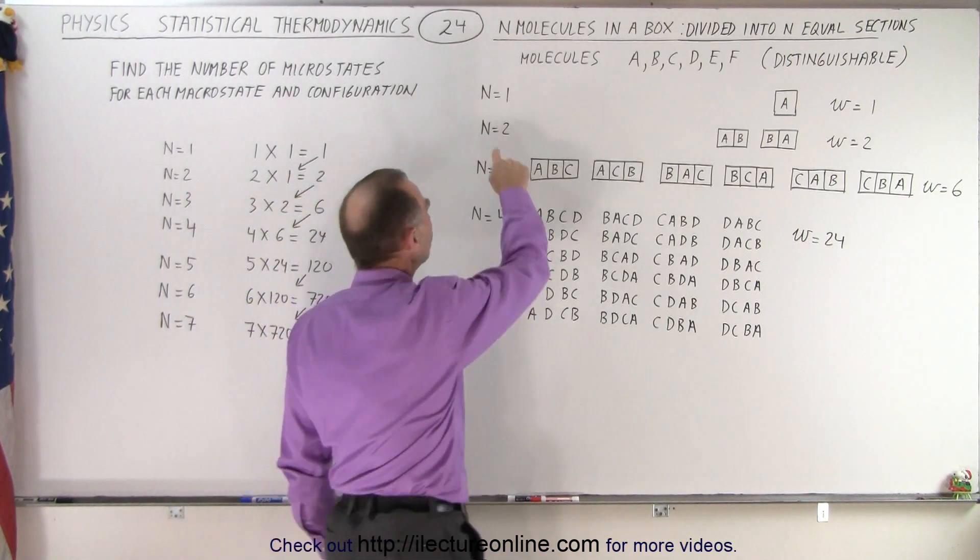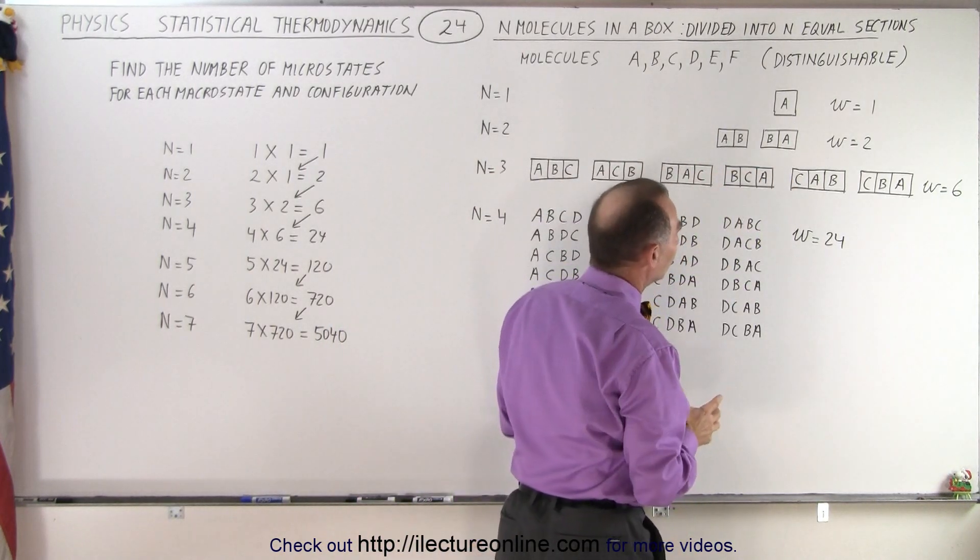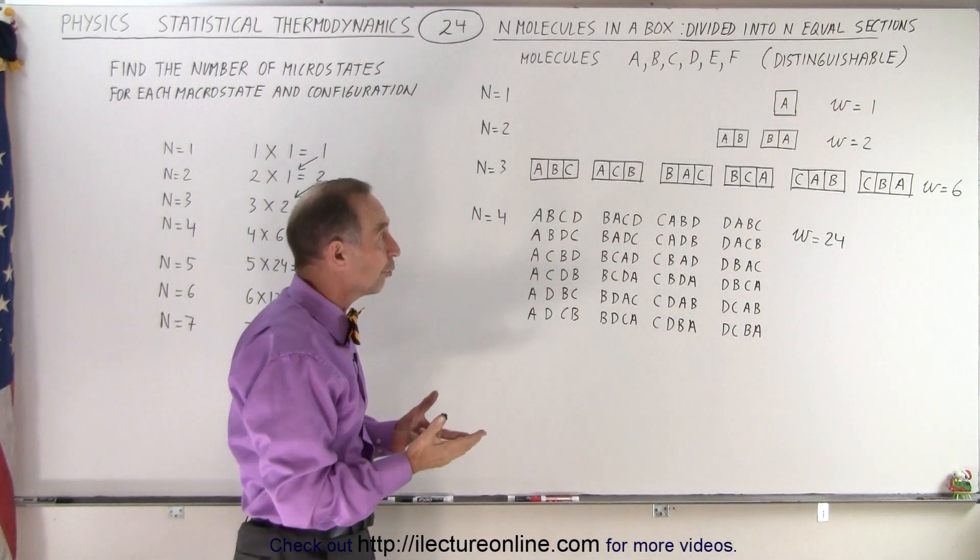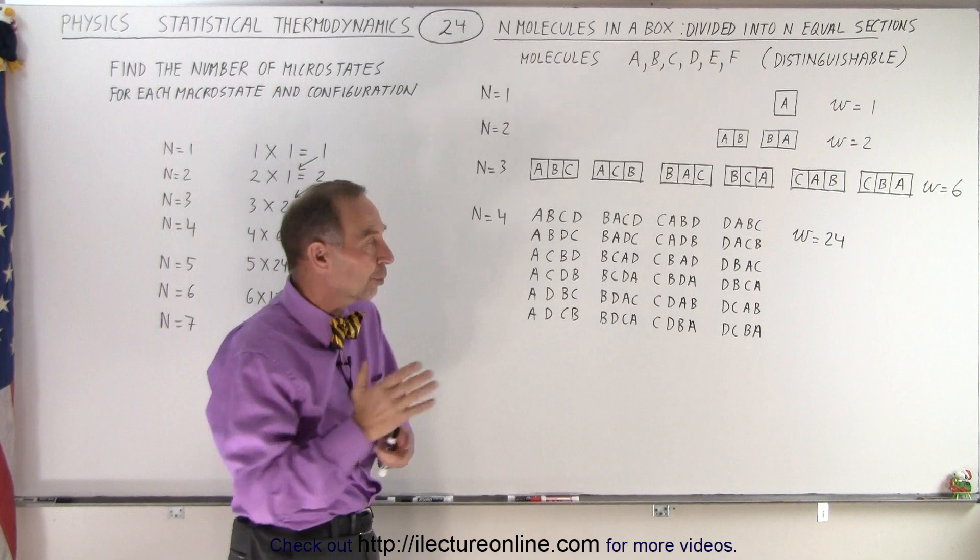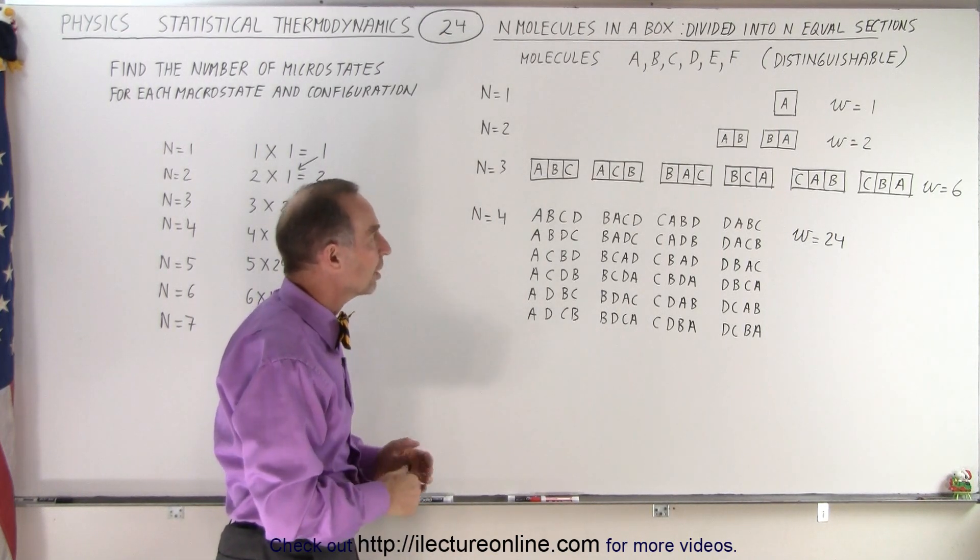But if you have two molecules and two partitions, and we can put one molecule in each partition, then you can see there's two possible ways in which we can do that. And therefore, w equals 2. In other words, the thermodynamic probability equals 2. The number of microstates equals 2.